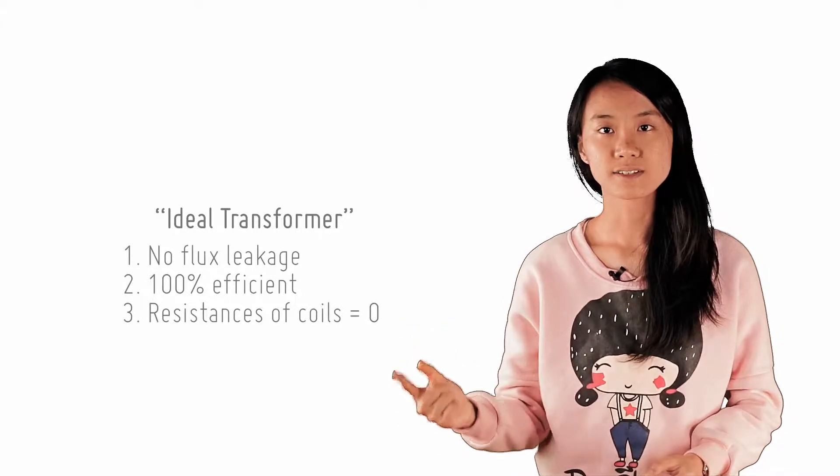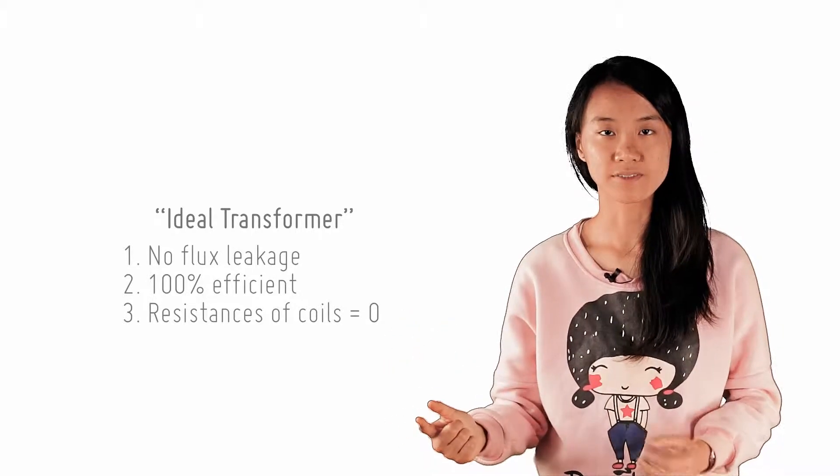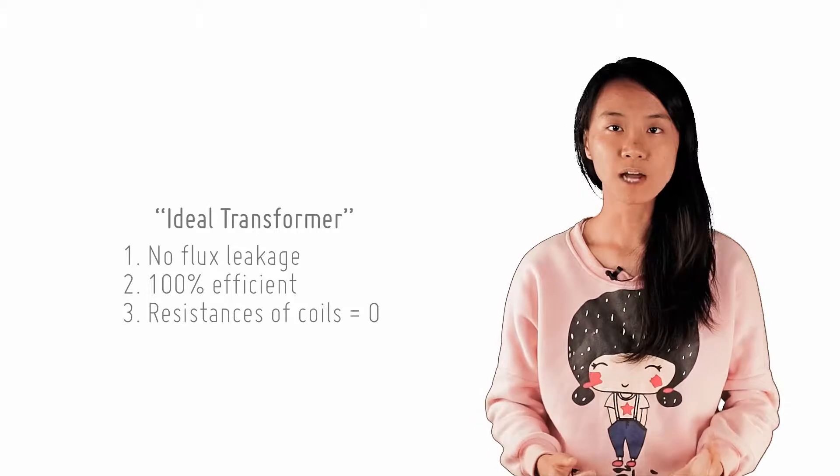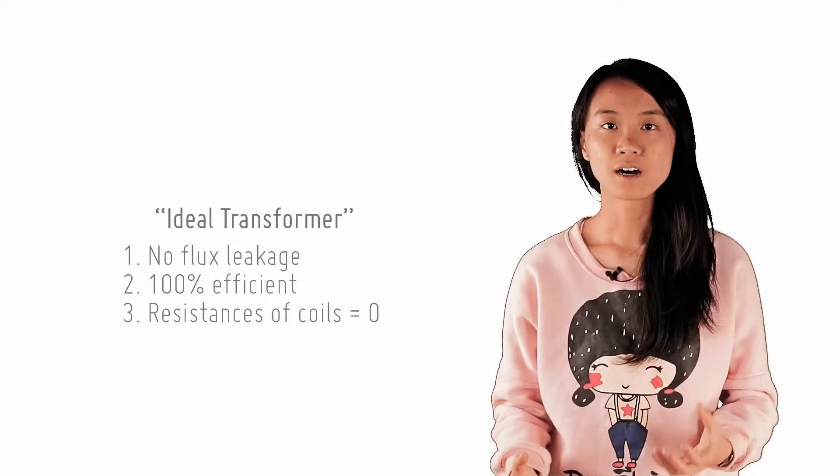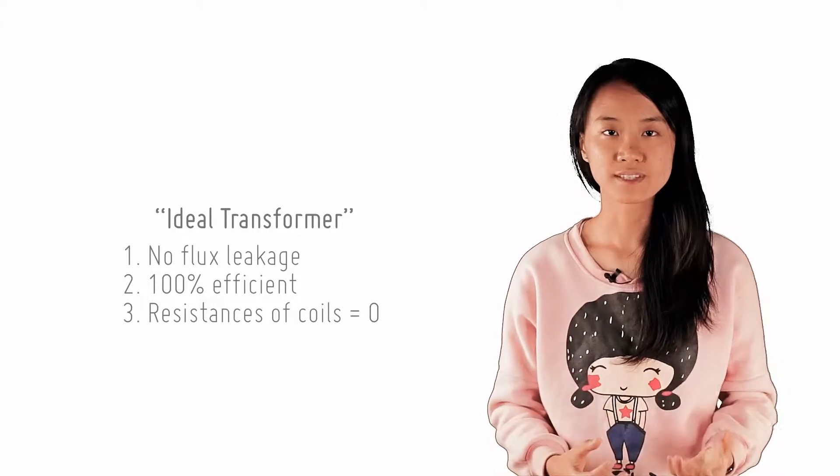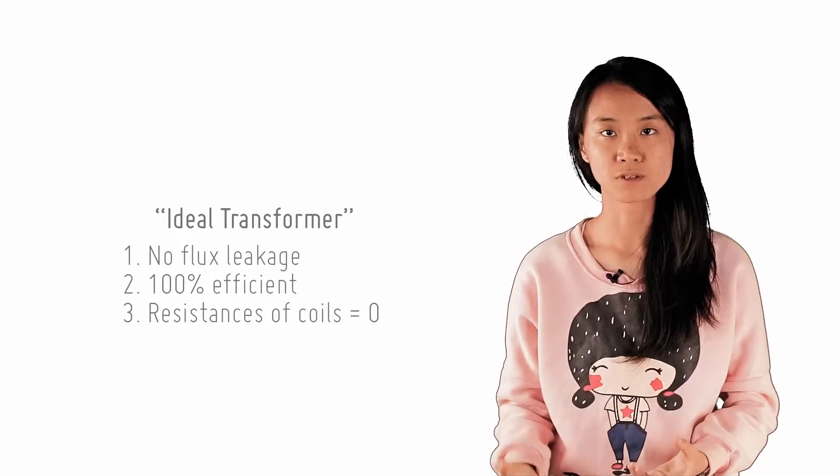Secondly, it assumes that the transformer was 100% efficient, so the power output equals the power input and there's no energy lost. Recall that this was used to show that the current was inversely proportional to the voltage between the two coils.